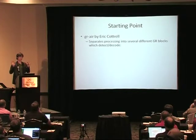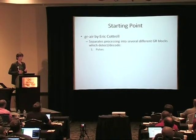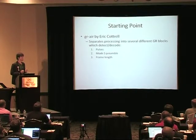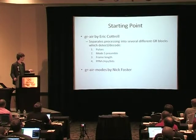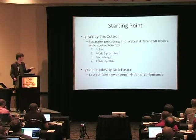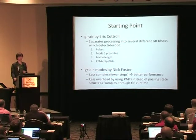I actually started with GIA by Eric Cottrell. He separates the decoding into several different GNU Radio blocks, each doing separate things, which is good because it can work across different threads. First it looks for pulses, then the preamble, has a look at how long the data frame is, and then gets the ones and zeros out to form the packet. The other great piece of work is by Nick Foster — GIA Air Mode S — which is quite an improvement, being far less complex with better performance and using all the cool new features of GNU Radio.